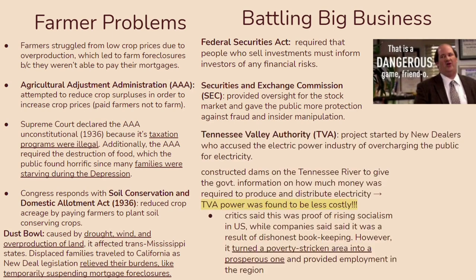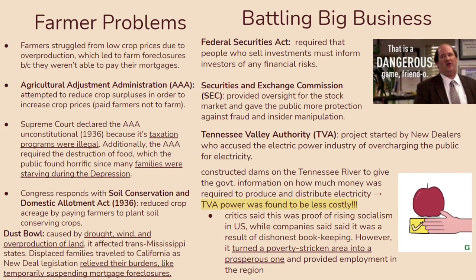You should also know about the Securities and Exchange Commission — the SEC — which provided oversight for the stock market and gave the public more protection against fraud and insider manipulation. But really one of the most important ways FDR tackled big business is through the Tennessee Valley Authority — the TVA. This was a project started by New Dealers who accused the electric power industry of overcharging the public for electricity. The government constructed dams on the Tennessee River to gather information on how much money was required to produce and distribute electricity, and TVA power was found to be a lot less costly. It ultimately turned a poverty-stricken area into a prosperous one and provided employment in the region.